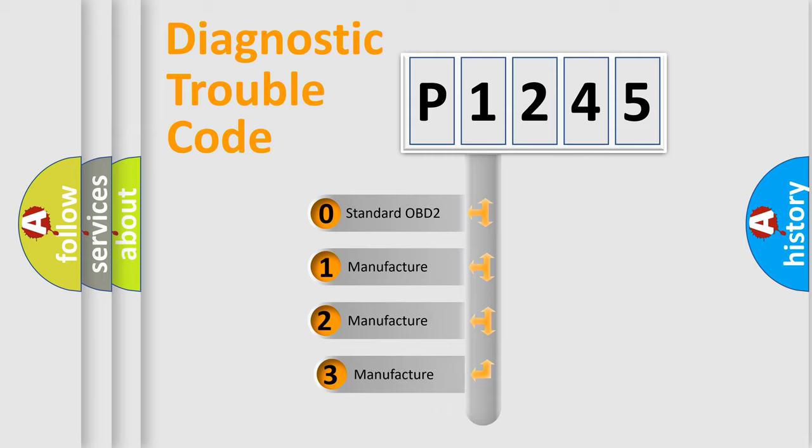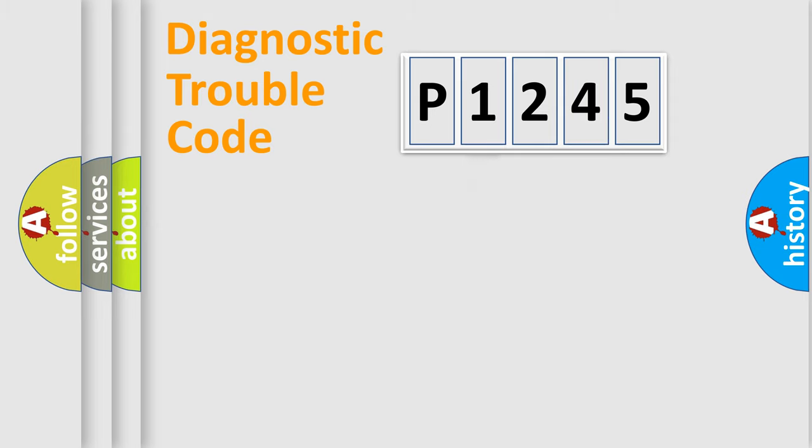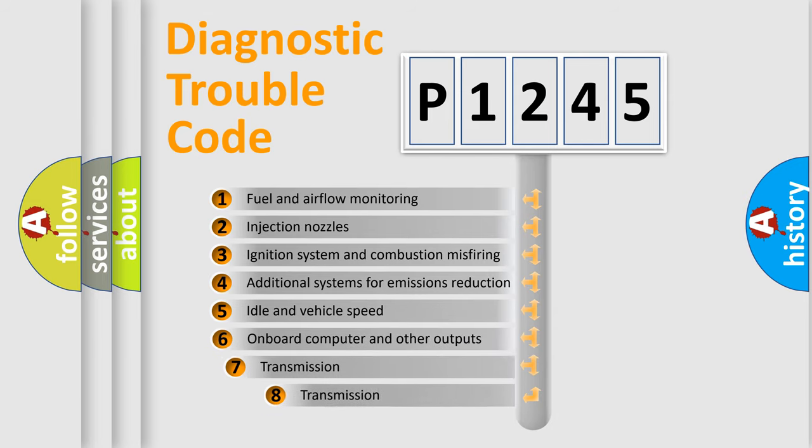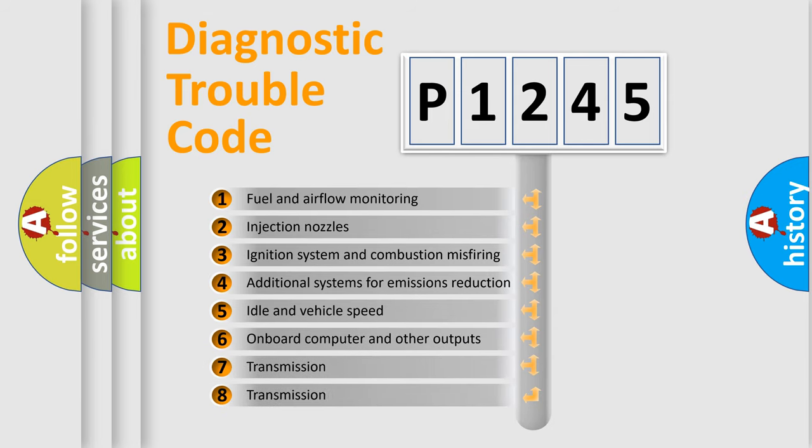If the second character is expressed as zero, it is a standardized error. In the case of numbers 1, 2, or 3, it is a manufacturer-specific expression of the car-specific error. The third character specifies a subset of errors.